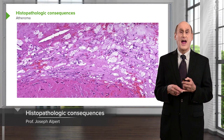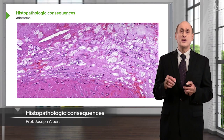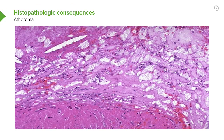Here is an example of atheroma under the microscope. You can see all these little what look like needles and little round holes. All of those are accumulation of cholesterol in the artery, and mixed in there is lots of scar tissue. This material is under the tunica intima, that is the top layer of the arterial wall, right up against the channel.